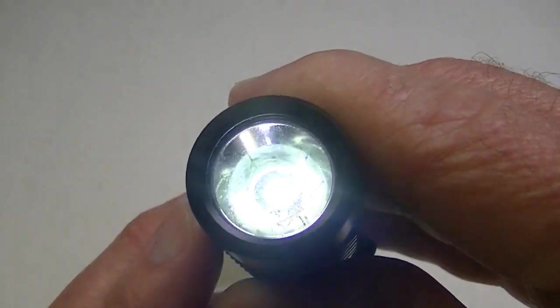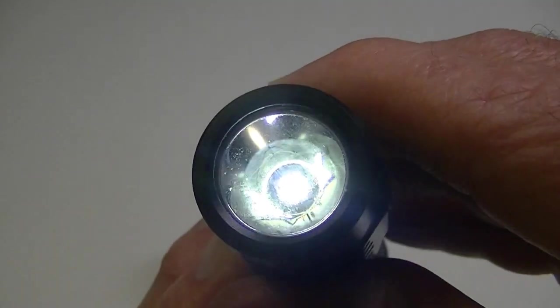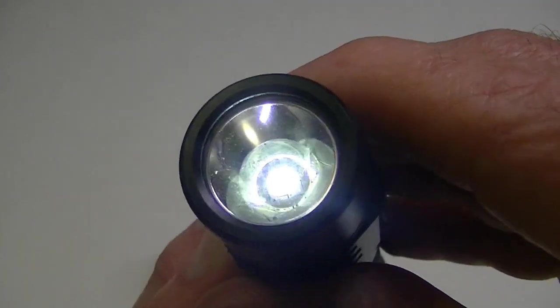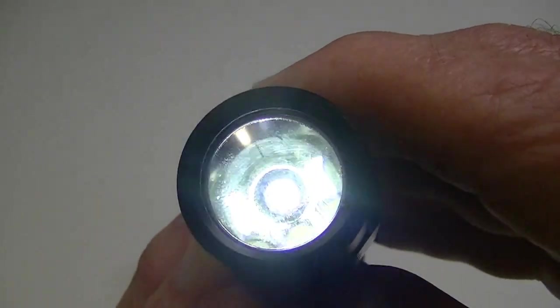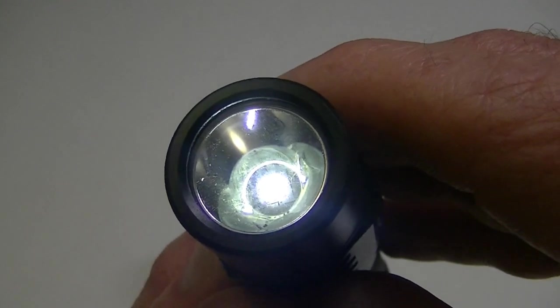So when you first get it, it won't go as low as it is right now. When I press it like that and hold for a second, I get the lowest mode and right now this is set at the lowest it can possibly be, which would be like one lumen or maybe half a lumen. But when you first get it, it won't be set that low.